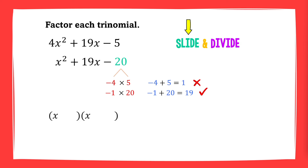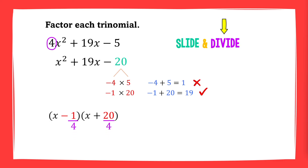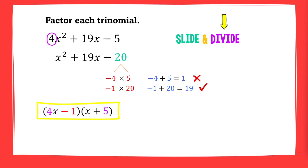So we set up the binomials with x in each and place negative 1 and positive 20 in separate binomials. Now time to divide. Bring back the coefficient of x squared, 4, and divide each constant by 4. Since 4 can't divide into 1 evenly, we place 4 in front of x. 20 divided by 4 is 5. Therefore, we get 4x minus 1 times x plus 5.